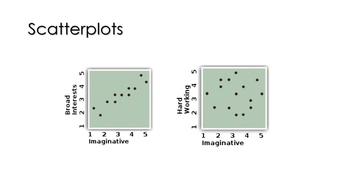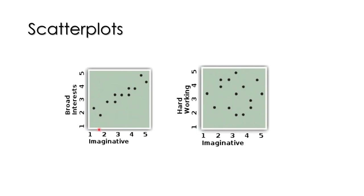These relationships can be graphically illustrated in scatter plots, where one variable is on the x-axis and one is on the y-axis. In the left-hand scatter plot, we have 'imaginative' on the x-axis and 'broad interests' on the y-axis, with data from about 10 subjects. For example, one person scored 2 on imaginative and 3 on broad interests — each dot represents one person's score on the two variables.